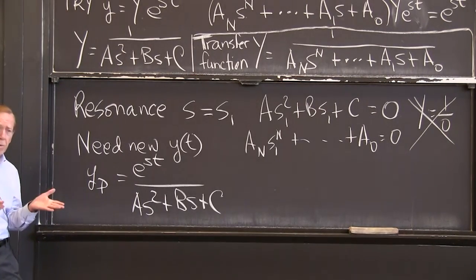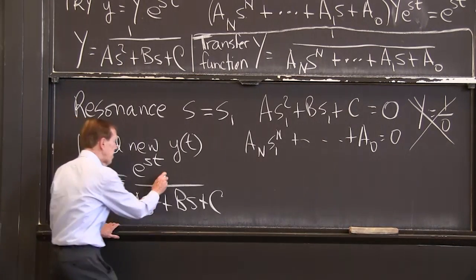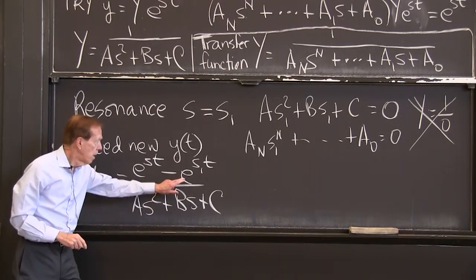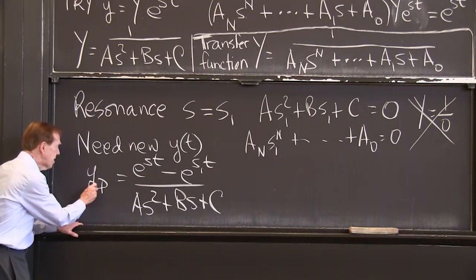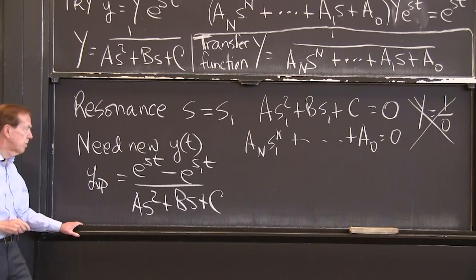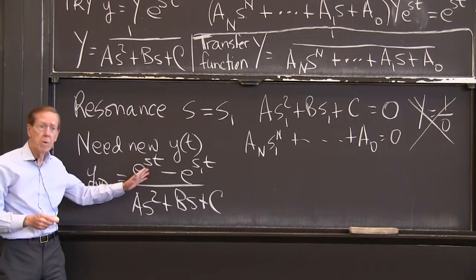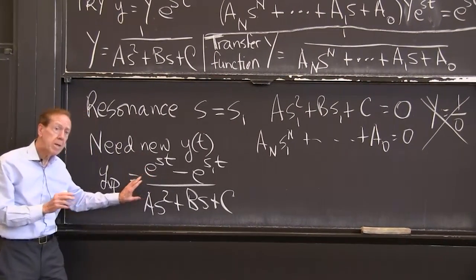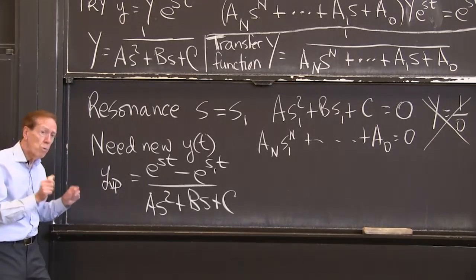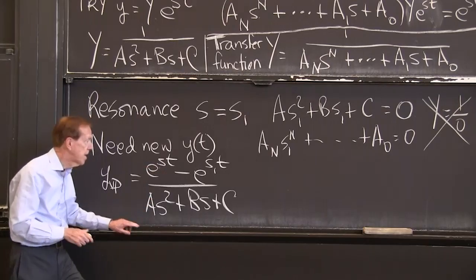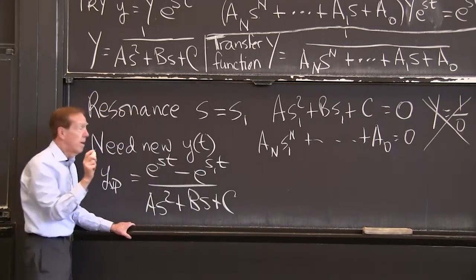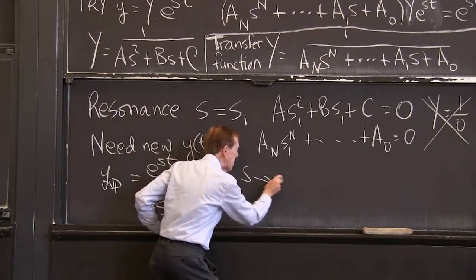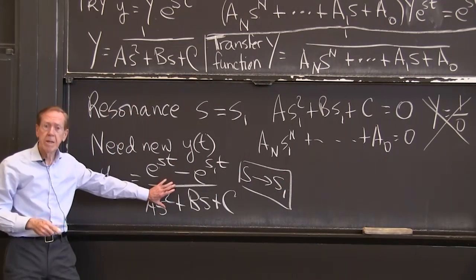So where do we start? So our y-particular solution is this e to the s t over a s squared plus b s plus c. Right? That's our particular solution, if it works. Resonance is the case when this doesn't work because that's 0. Now, that's a particular solution. I'll subtract off a null solution. I can do that. I still have a solution. So I'll subtract off e to the s1t.